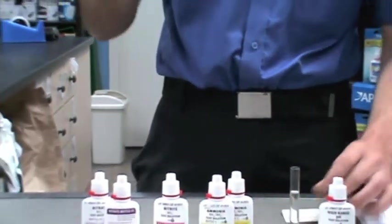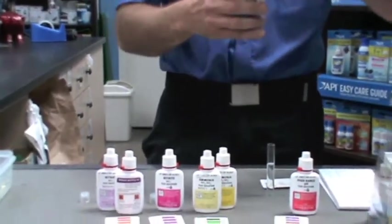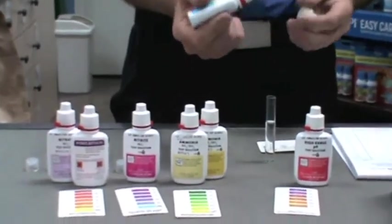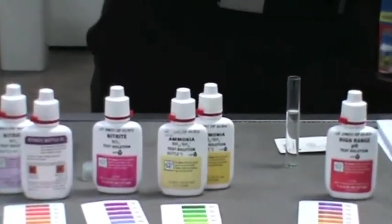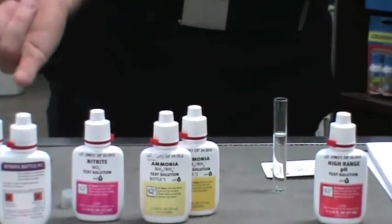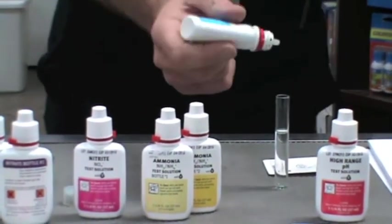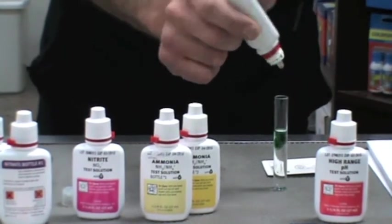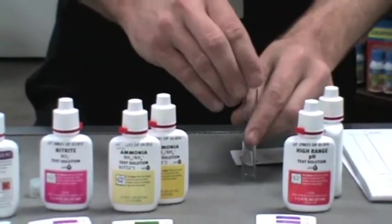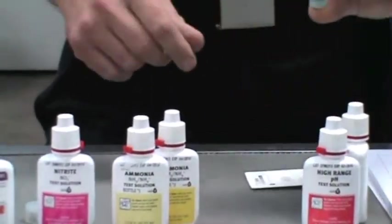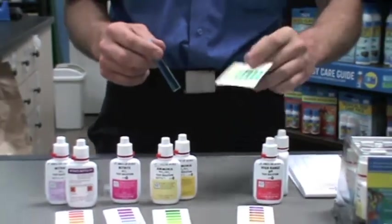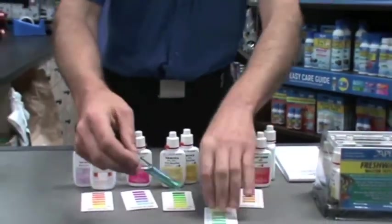With the pH we add three drops of test solution. Always hold the bottle vertically to get the correct size drop and accurate test results. Three drops into the test tube, pop the cap on, shake the vial, and we're able to read the pH of our water.